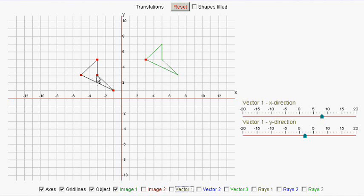And when you have the same shape which is just moved a certain distance away, it's called a translation.